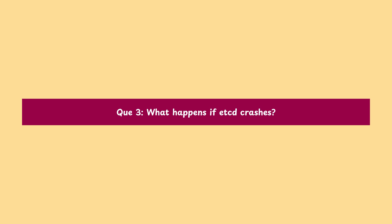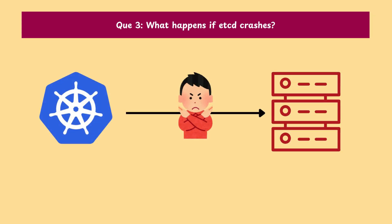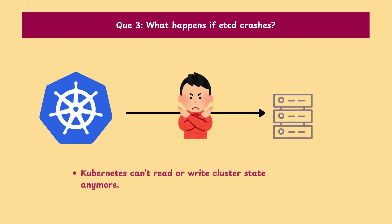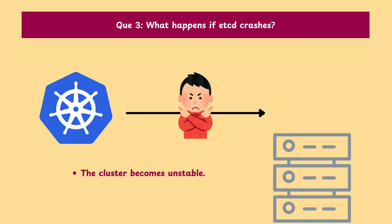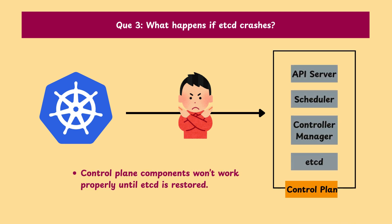Question 3: What happens if etcd crashes? Kubernetes can't read or write cluster state anymore. The cluster becomes unstable, and control plane components won't work properly until etcd is restored.